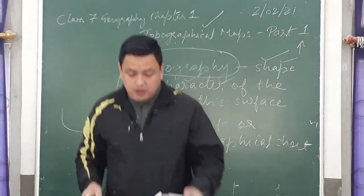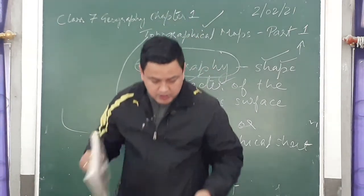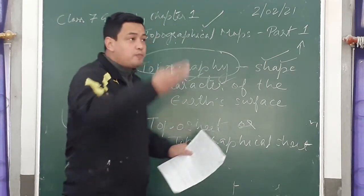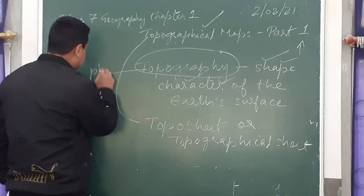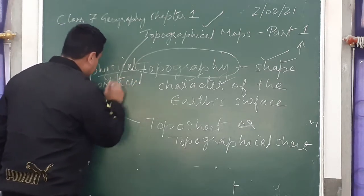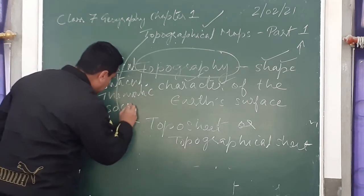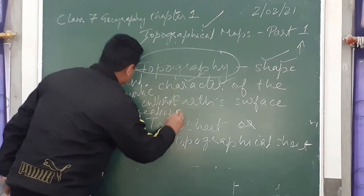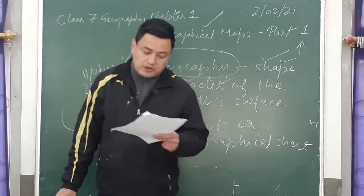What is a toposheet? It is a kind of map that shows topographical features. It shows physical features, political features, thematic features, and also socio-cultural features. A topographical map shows four kinds of features. This is known as a topographical map.